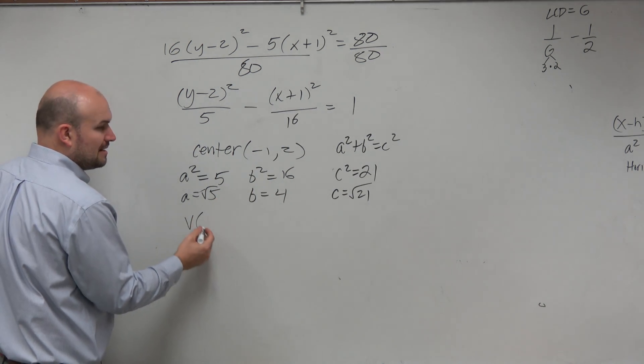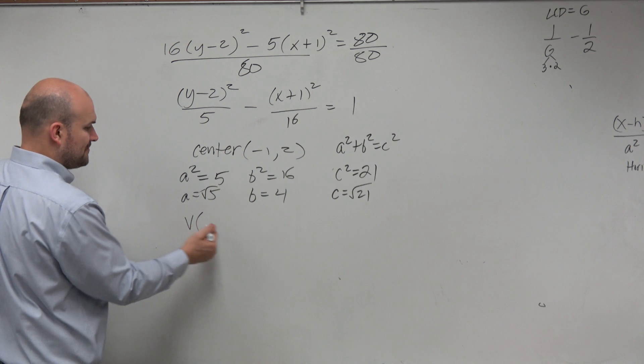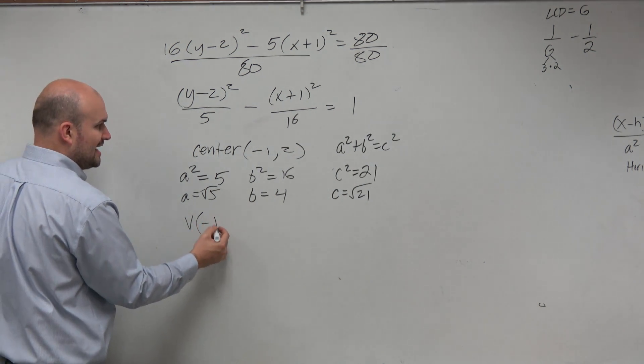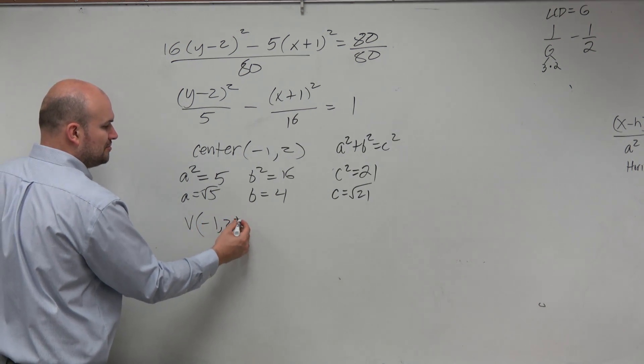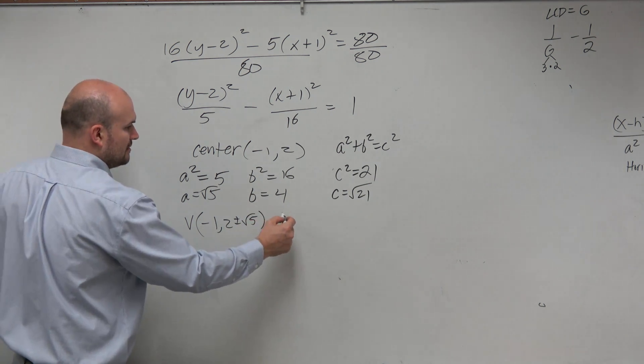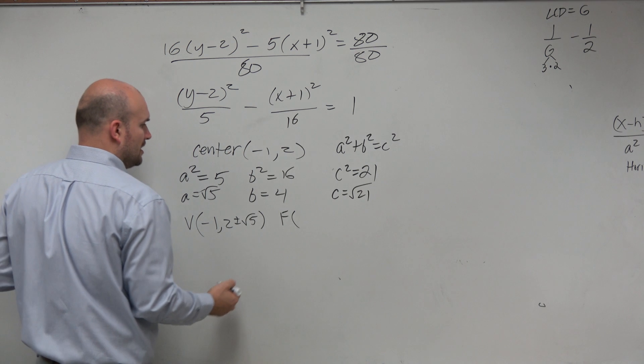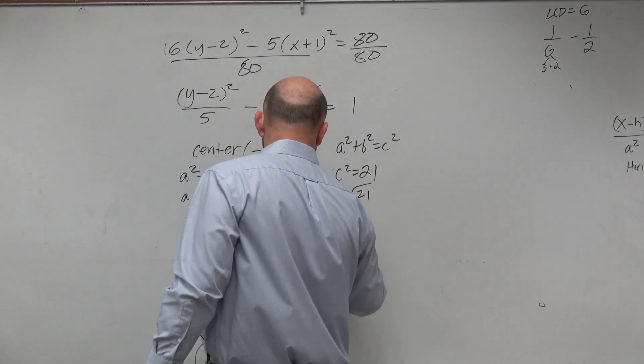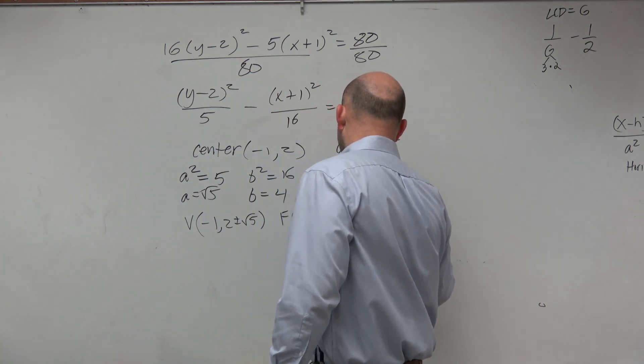The k coordinate. You want to add it from up and down. So my vertices, I'm going to find this information, and then I'm going to sketch it so we can check our work. My vertices in this case is going to be negative 1, comma 2 plus or minus the square root of 5. My foci in this example is going to be negative 1, comma 2 plus or minus the square root of 21.